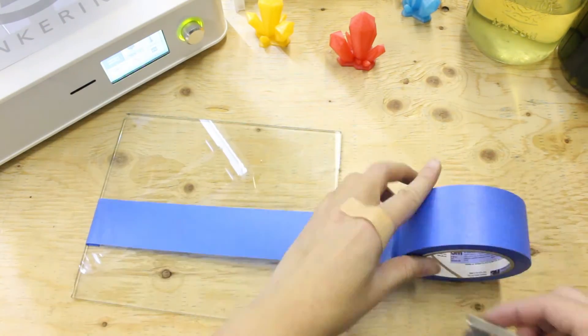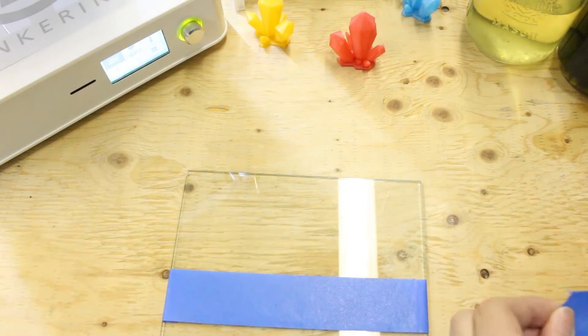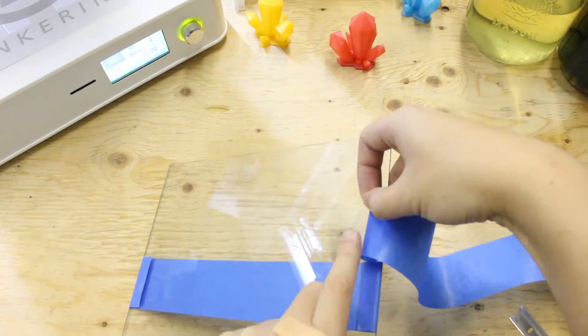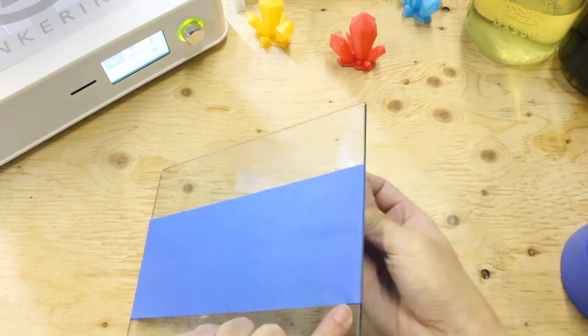Apparently you will have to make sure the tape is stretched out completely and it's flat against the build plate. Repeat the process one more time. Done! Let's try printing on this and see if it works.